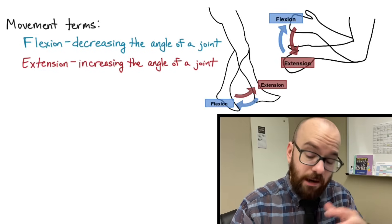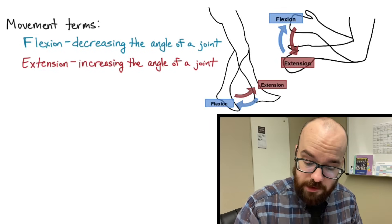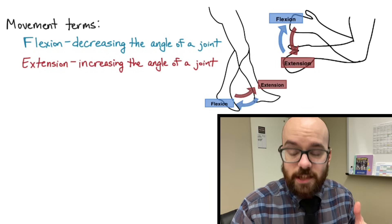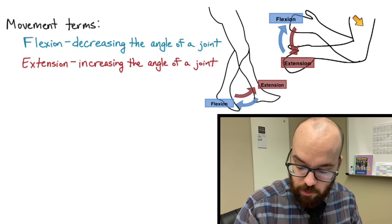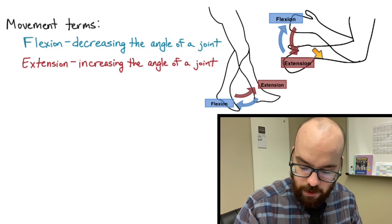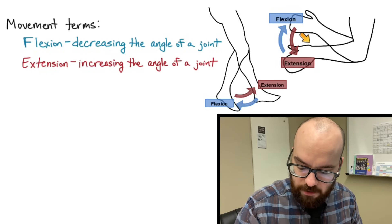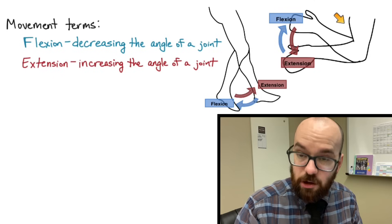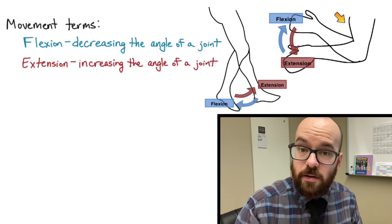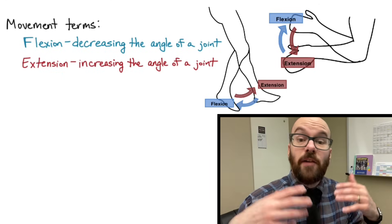These two diagrams demonstrate those terms. With extension you increase the angle between the humerus and the radius and ulna by moving the arm down. With flexion of the elbow joint you decrease the angle by moving your radius and ulna — your lower arm — upward, decreasing the angle between those bones.